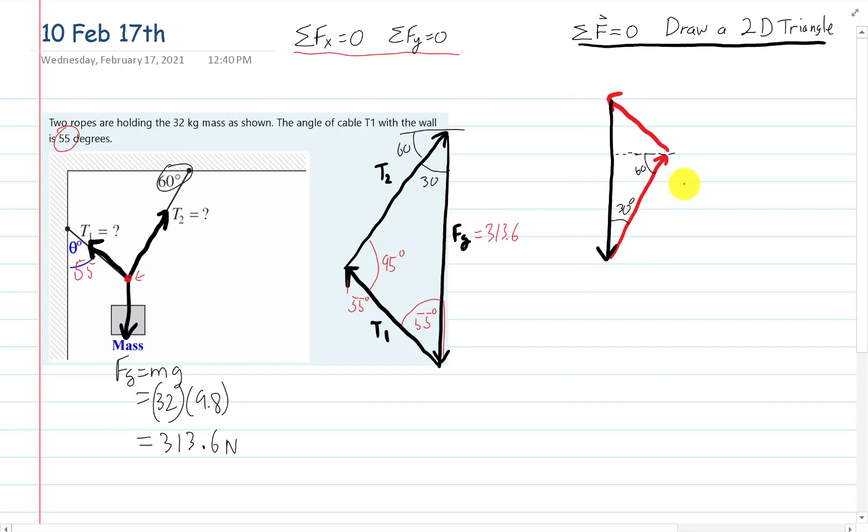And we have one of the sides, 313.6, we can get the other two sides by sine law. Let's just do the geometry over here so we get to practice. Where's this 55 over here? That's right, it's right there, that's 55.